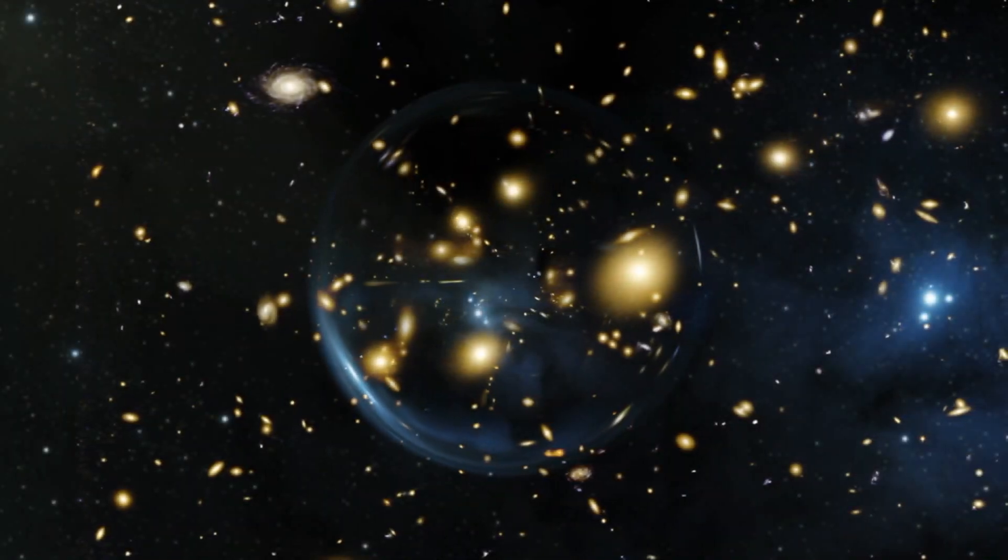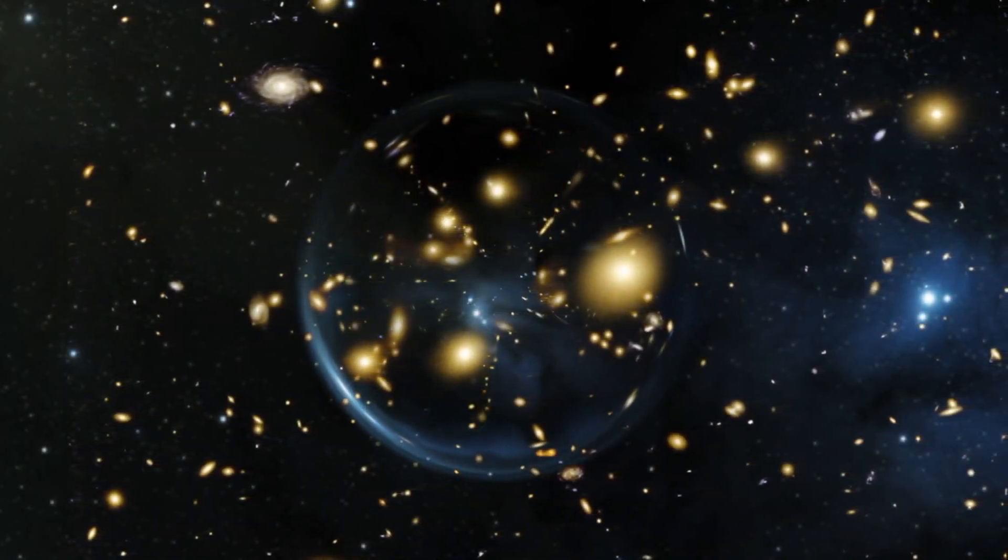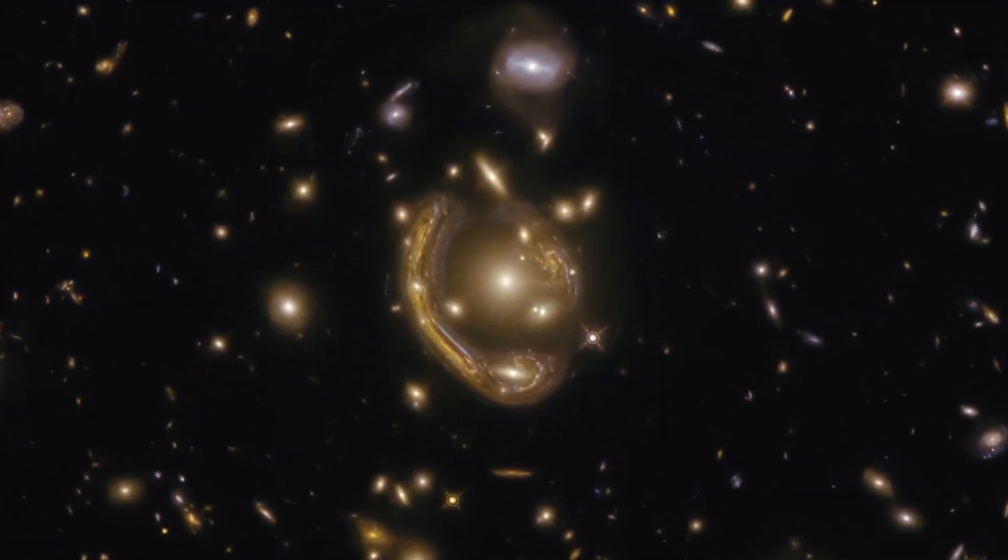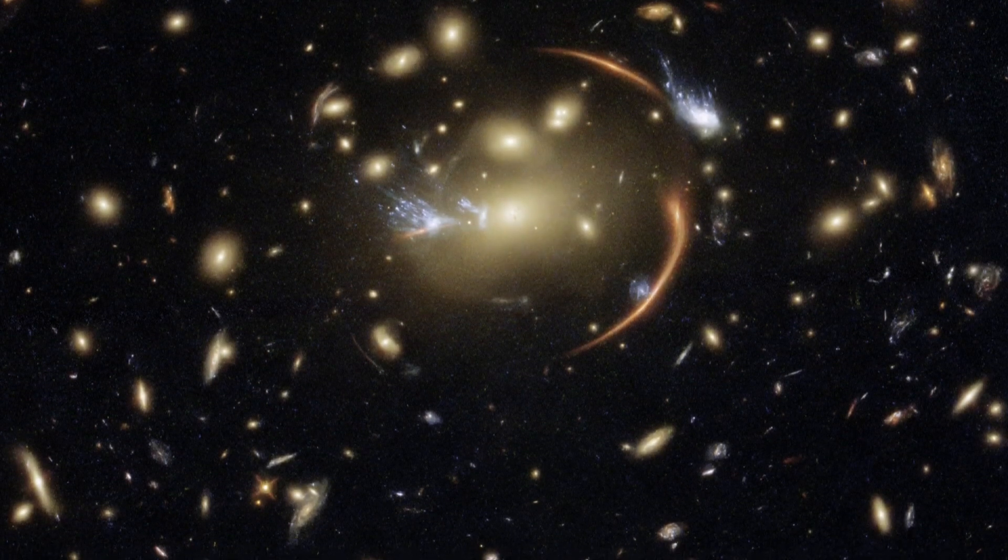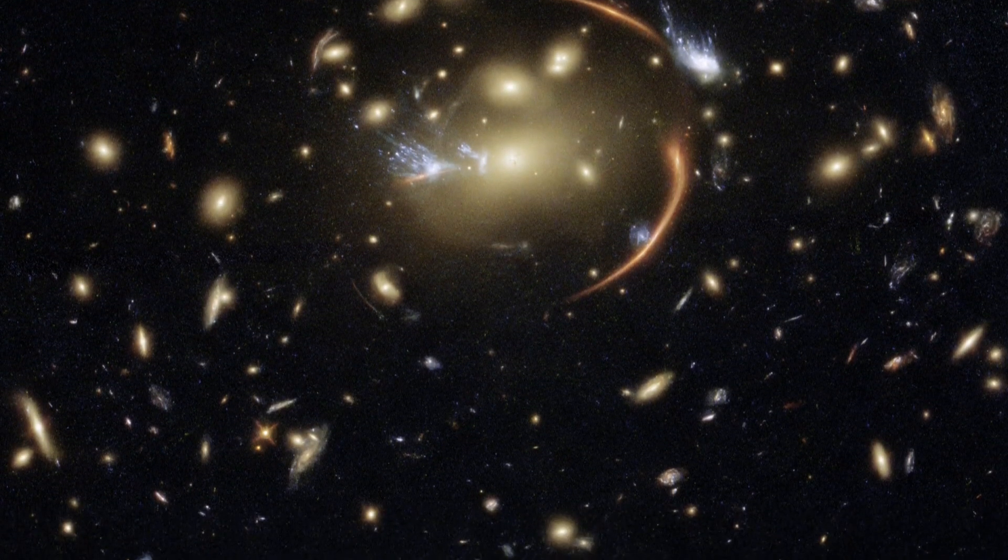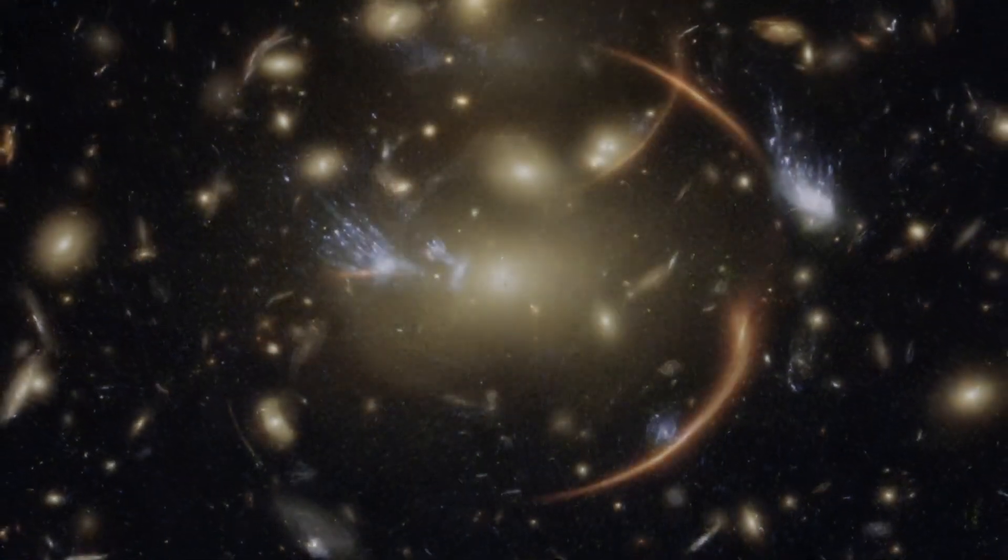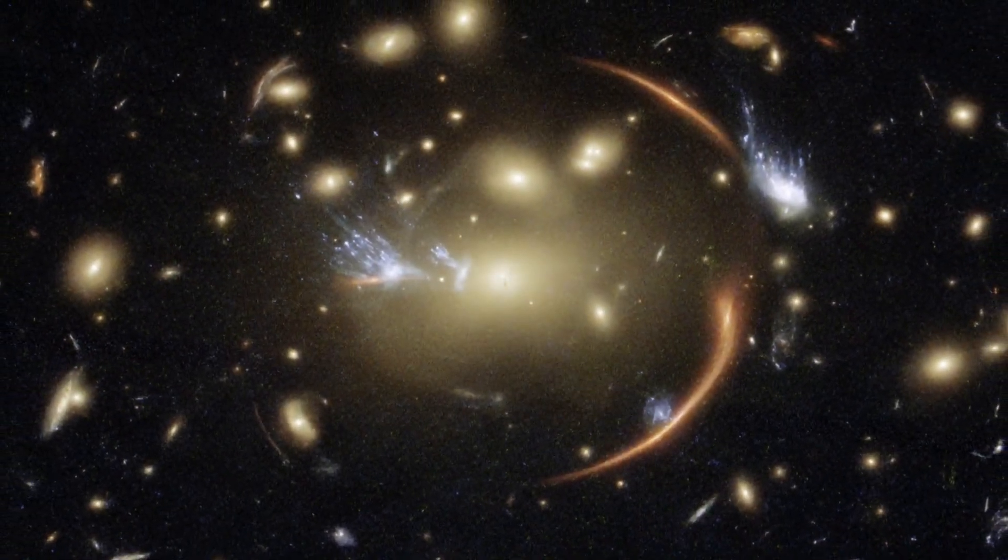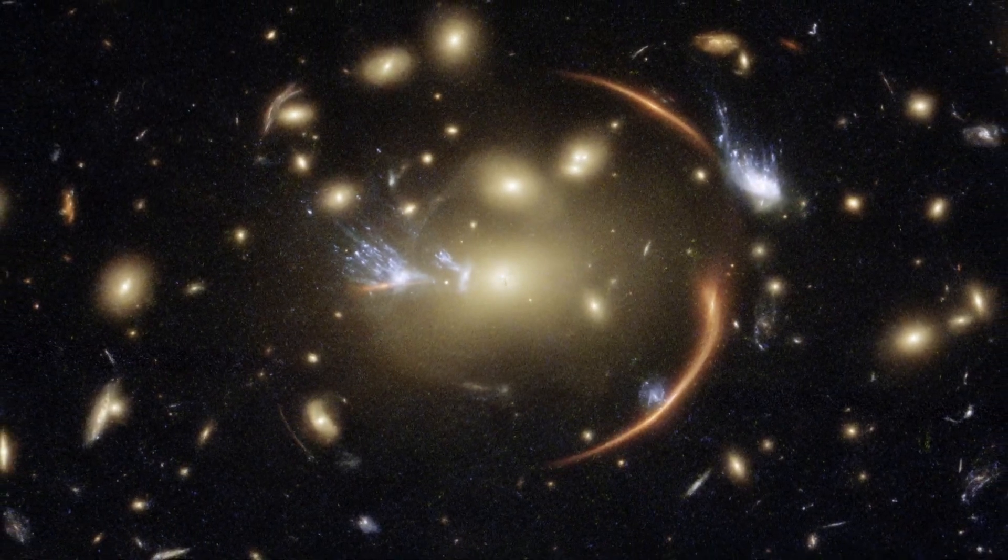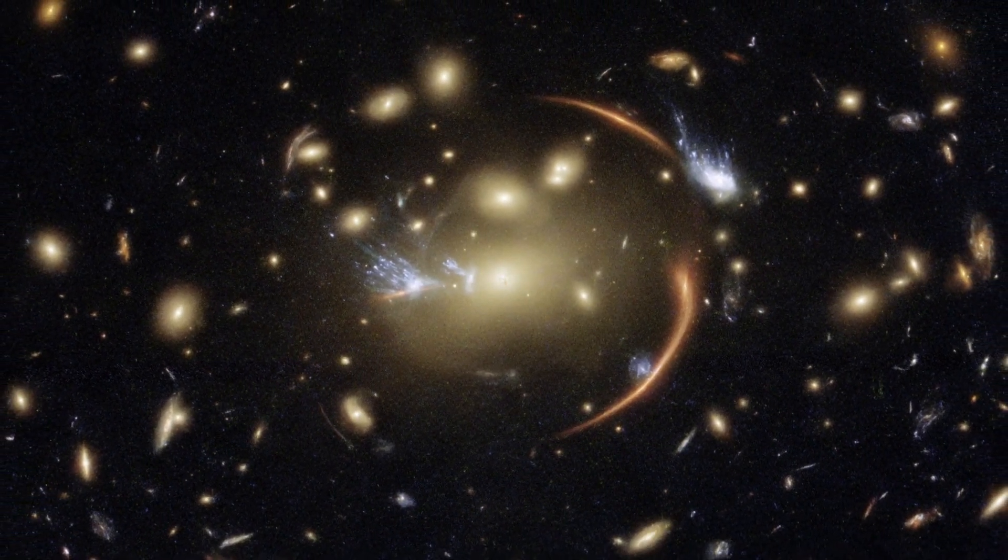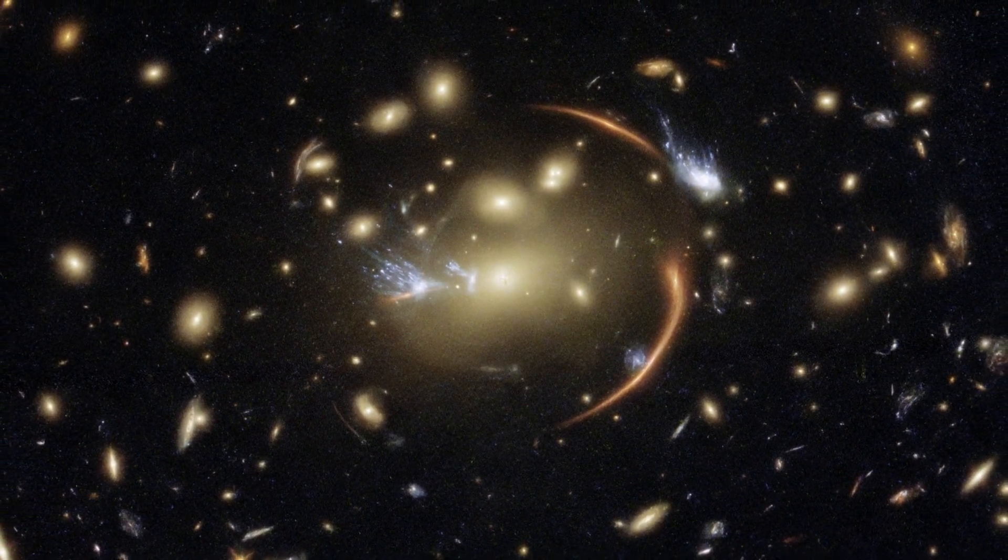Gravitational lensing occurs when massive celestial bodies bend and split light, magnifying and distorting images of objects behind them. In the case of the Requiem supernova, a colossal galaxy cluster known as MACS J0138.0-2155 acted as a magnifying glass, unveiling the stellar explosion in three distinct snapshots.